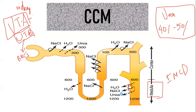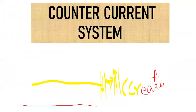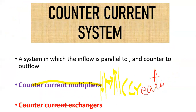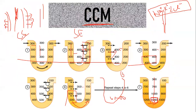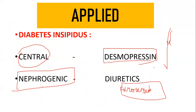When writing the exam answer, define countercurrent mechanism, mention requirements, cover countercurrent multiplier and exchanger, explain the single effect, mention the role of urea with UTA transporters, explain vasa recta, and include applied physiology. Draw the diagram from Guyton — it will give you maximum marks. Please try to revise immediately after the video. If you have any doubts, post in the comment section. Thank you.